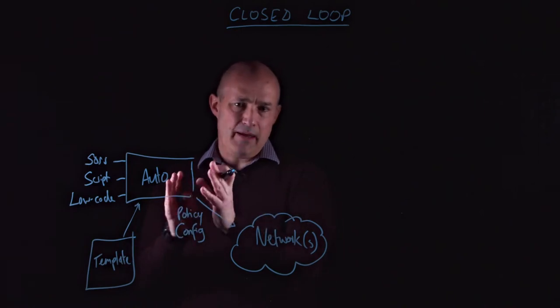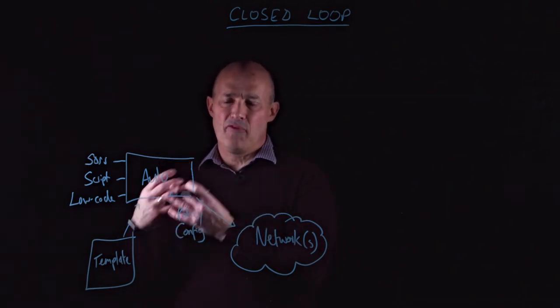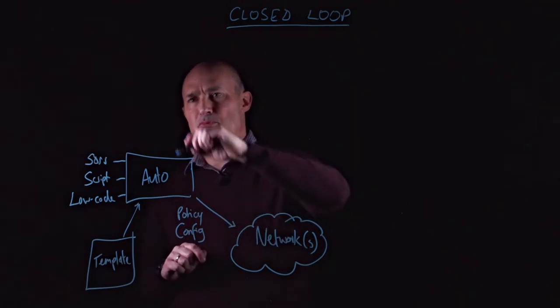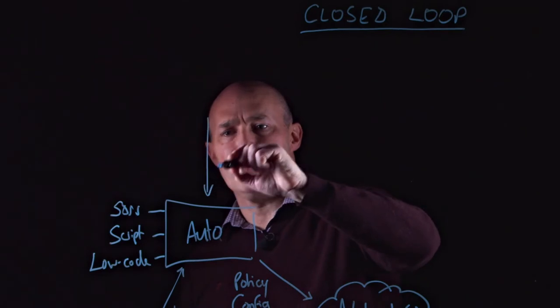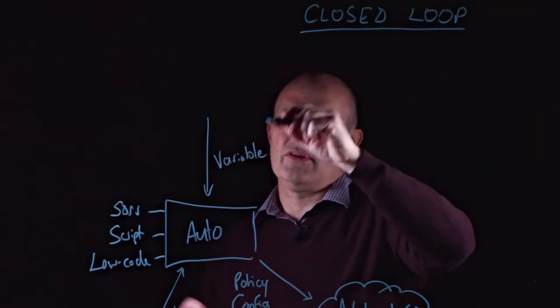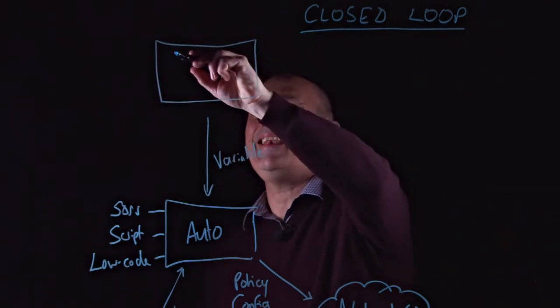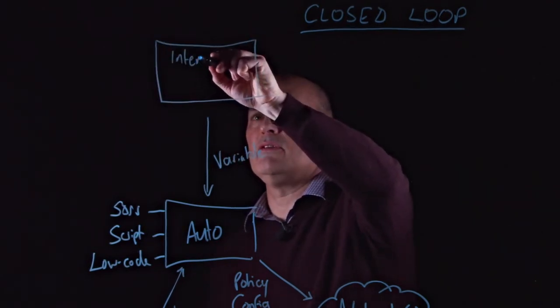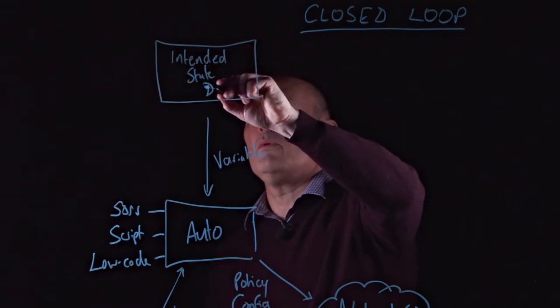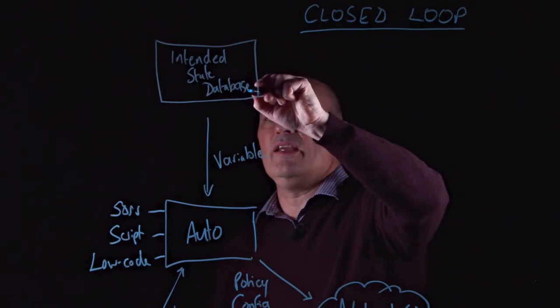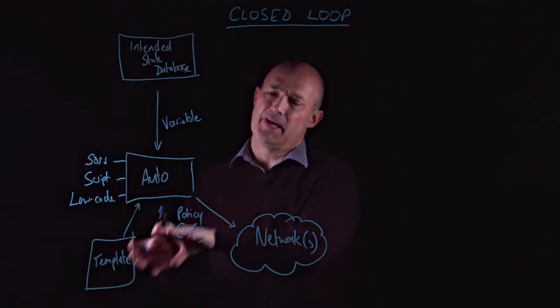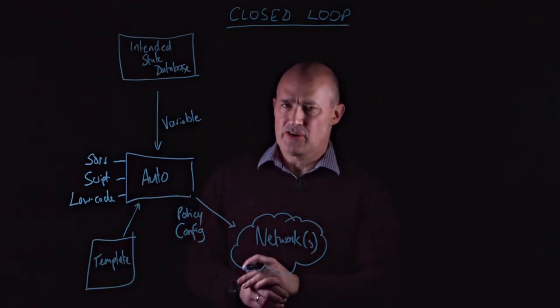But the template is great, but it needs to be rendered with information that's specific to the change you're making. And here's where the interesting piece comes. Because what you need to be able to do is take some variable information from a data source. That data source represents the intended state of your network. So you have an intended state database.